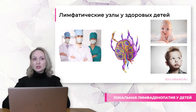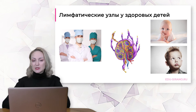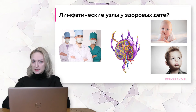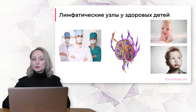Лимфатический узел – это периферический орган иммунной системы. В организме человека существуют как центральные, так и периферические органы иммунной системы. Важно помнить, что каждый отдельно взятый лимфатический узел является отдельным органом периферической иммунной системы. Поэтому необходимо с большим вниманием подходить к диагностике увеличенных лимфатических узлов у детей. Увеличение лимфатических узлов невозможно перерасти, и у каждого увеличенного лимфатического узла есть причина для такого состояния.